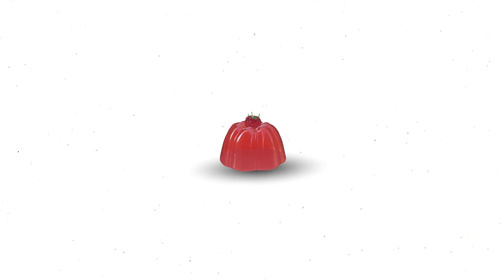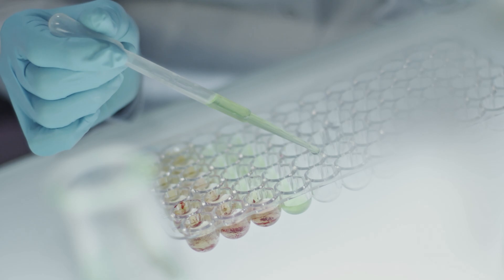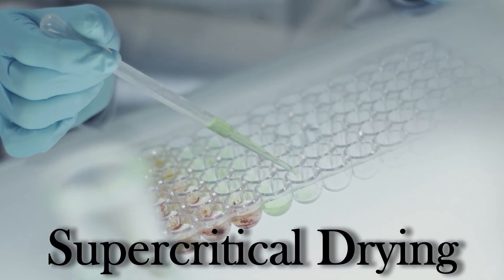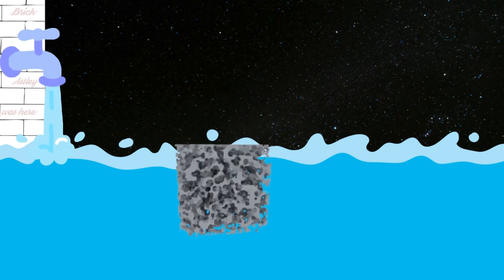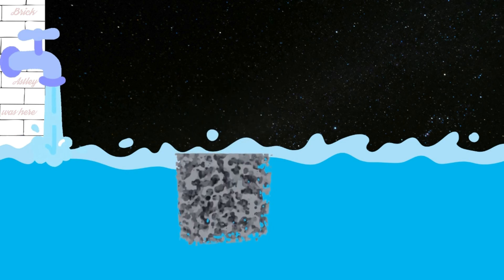So Samuel Kistler fixed this problem, and he did it with a process called supercritical drying. He realized you could replace one liquid with another in the jelly. So, he did. He replaced the water with alcohol.